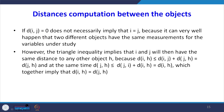If d(i,j) = 0, it does not necessarily imply that i = j, because two different objects can have the same measurements for the variable under study. However, the triangle inequality implies that if d(i,j) = 0, then i and j will have the same distance to any other object h. Since d(i,h) ≤ d(i,j) + d(j,h) = d(j,h), and simultaneously d(j,h) ≤ d(j,i) + d(i,h) = d(i,h), together these imply d(i,h) = d(j,h).